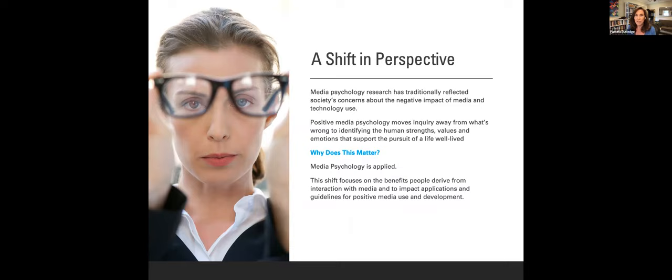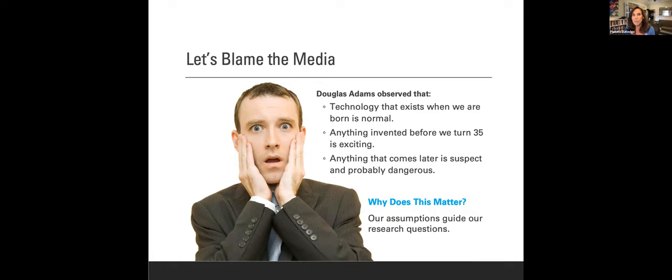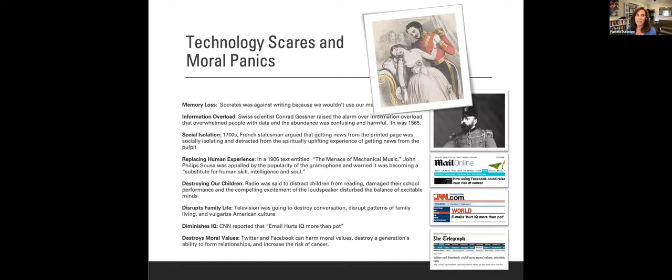This paradigm really changes our perspective from what's wrong to what's right. You know, there's sort of a cute saying from Douglas Adams, who's a writer, saying that the technology that exists when we're born is normal, right? So whatever we had when we were born, that's normal. Anything that was invented before we turned 35 is pretty exciting. Anything that comes after we're 35 is suspect and probably dangerous. The reason that this is important, and it's not really a joke, right, because you're used to what you grew up with. That's normal. The reason that this is important is that these assumptions live within our brains. We don't often think about them, but our assumptions guide the questions that we ask.